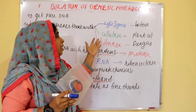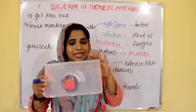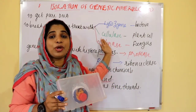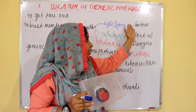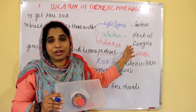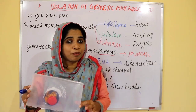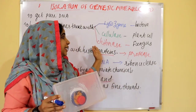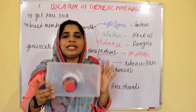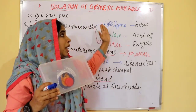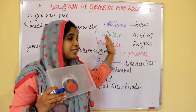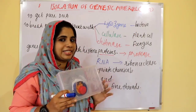Plant cells have cellulose — cellulase breaks the cellulose. Fungus cells have chitin polysaccharides — chitinase breaks the chitin. To summarize: bacteria use lysozyme, plant cells use cellulase, fungus use chitinase.